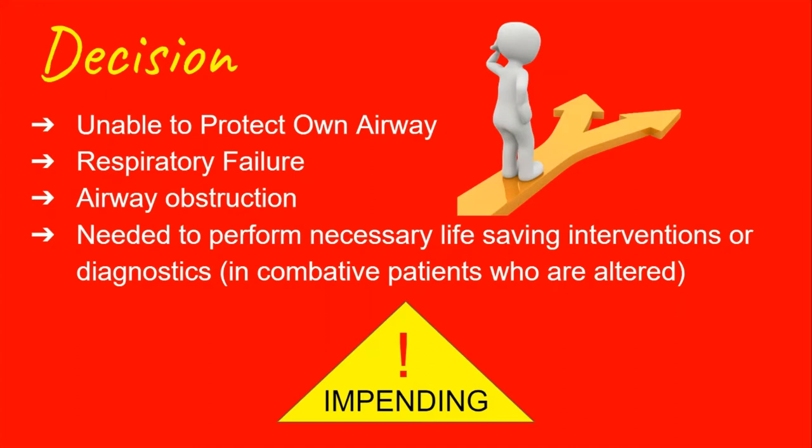Their GCS is 8 or less, meaning if they were to vomit, they would just aspirate on that vomit, or perhaps the patient is altered enough that if they're laying flat, their own tongue occludes their own airway. Another clear reason is when someone is in respiratory failure.